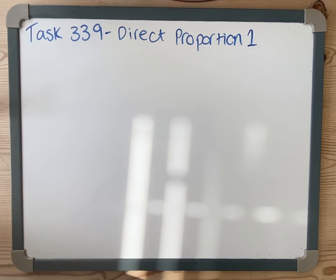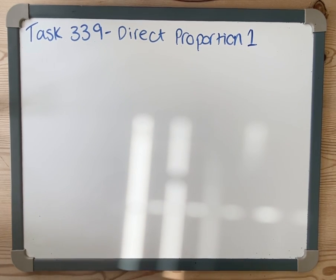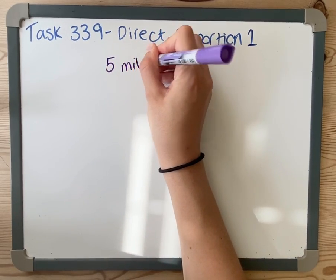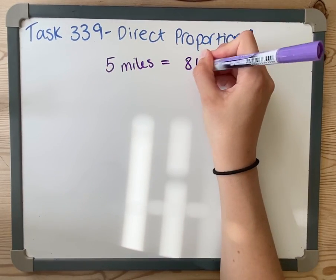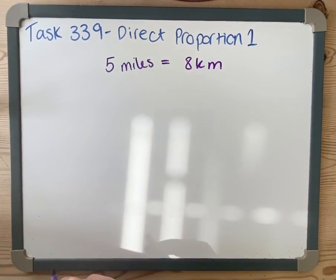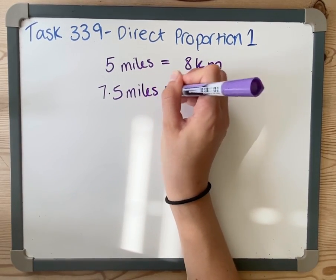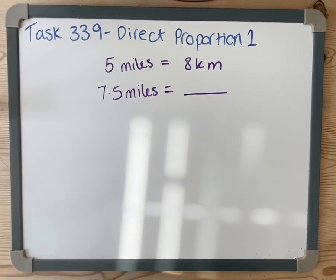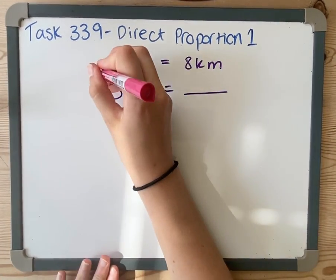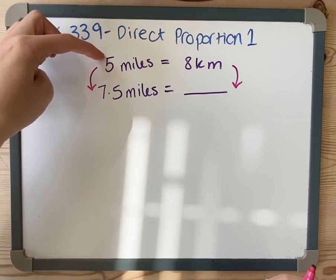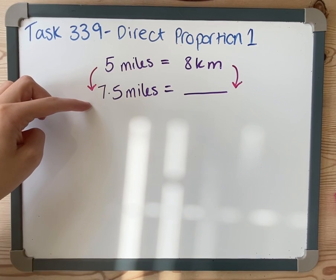The first question I'm going to explore: we've got an estimation that five miles is eight kilometers, and we are asked to convert 7.5 miles into kilometers. The key thing here is the relationship between this number and this one will be the same. So I need to work out what do I times 5 by to get to 7.5.